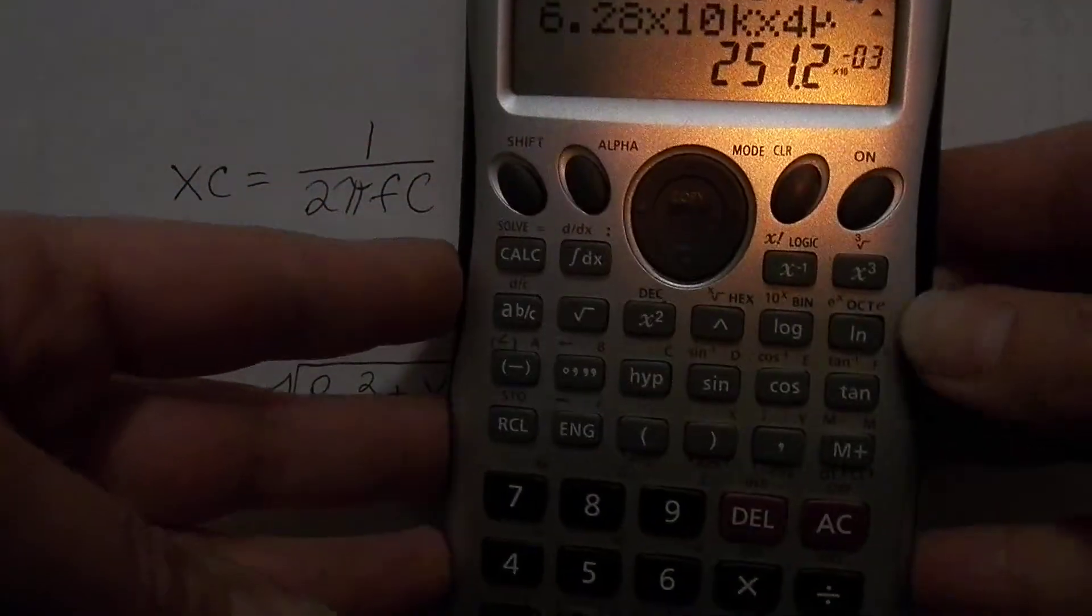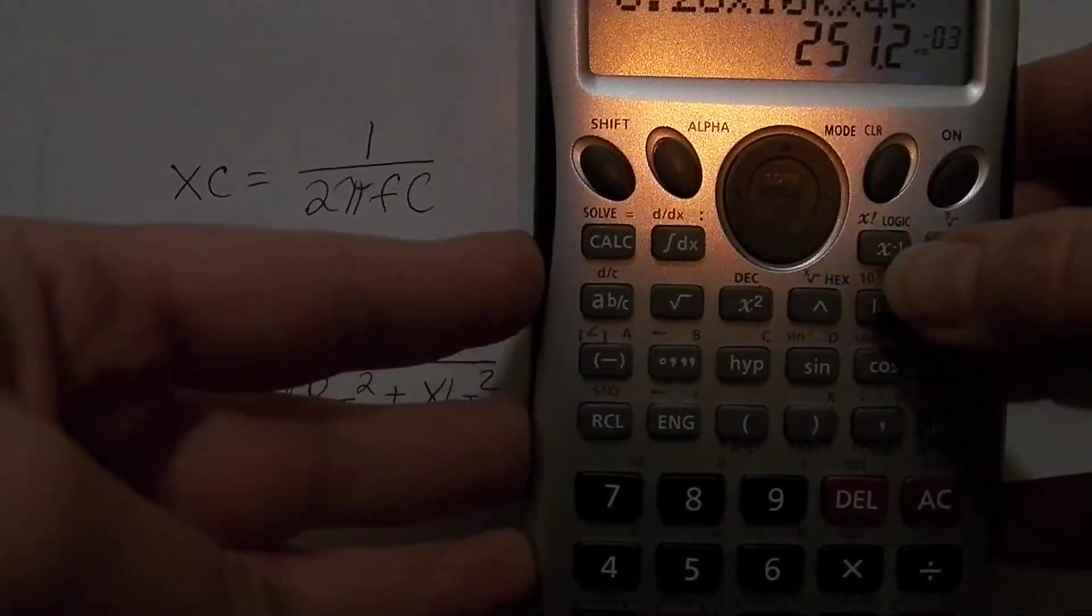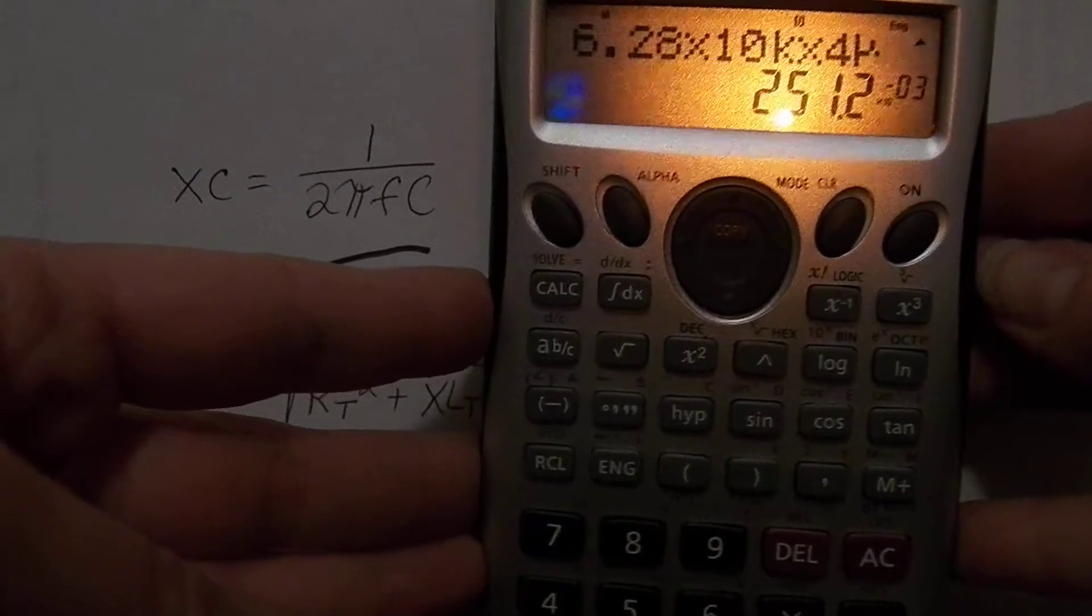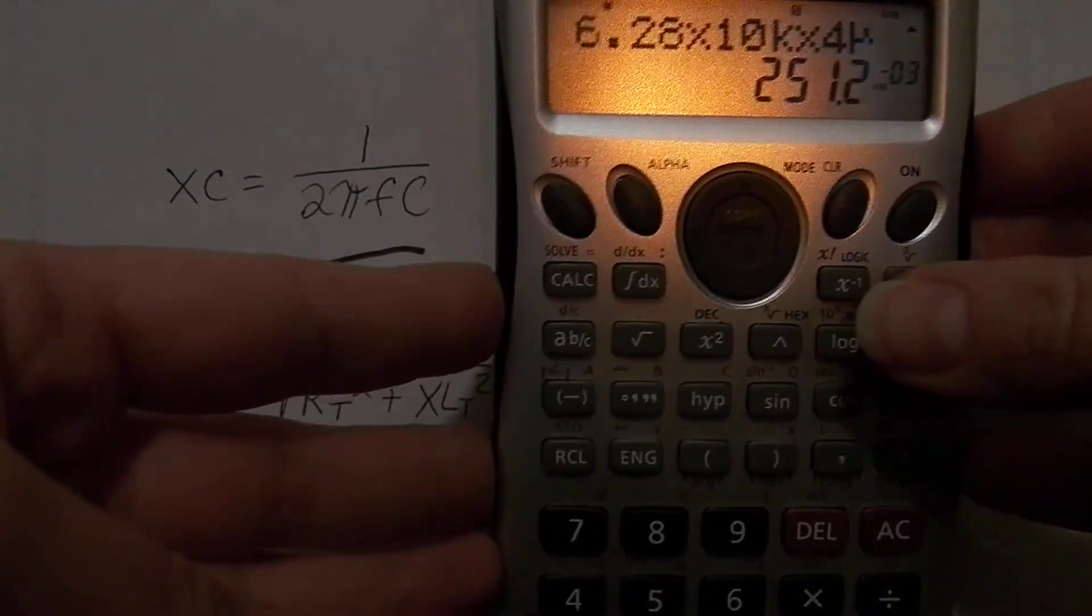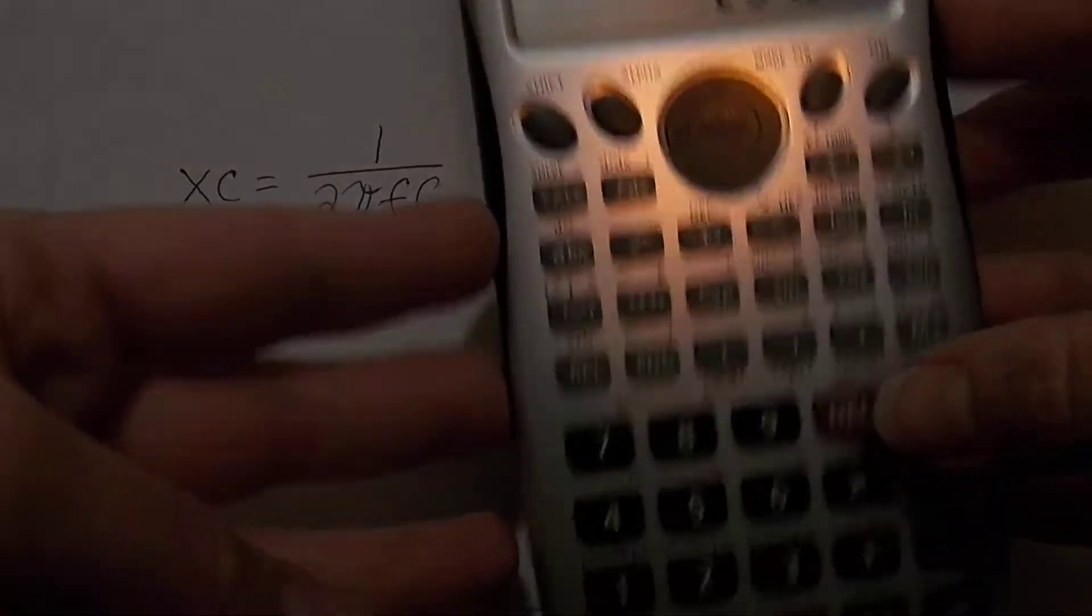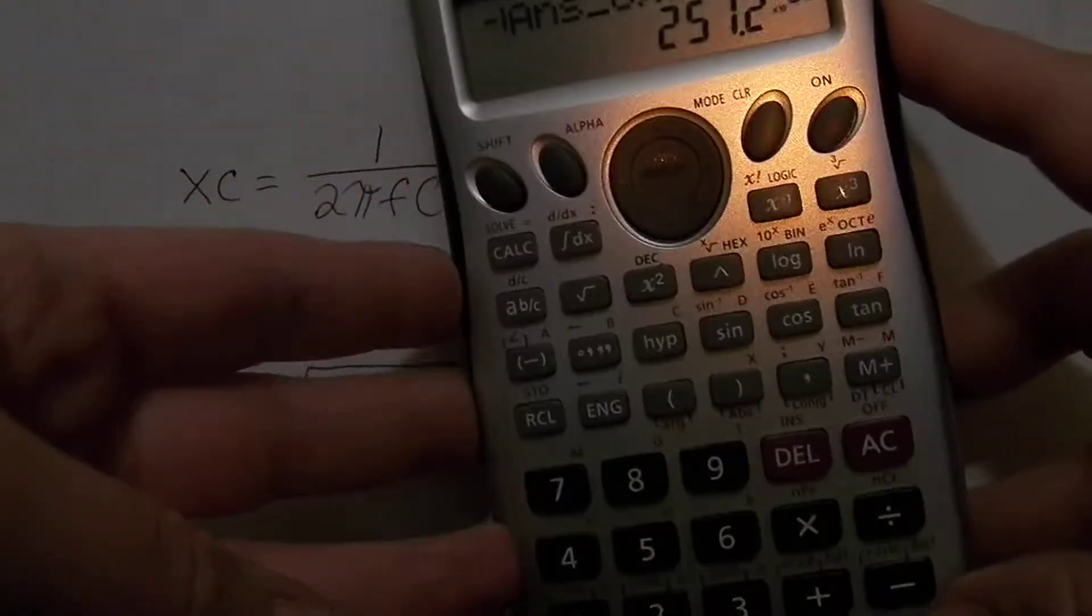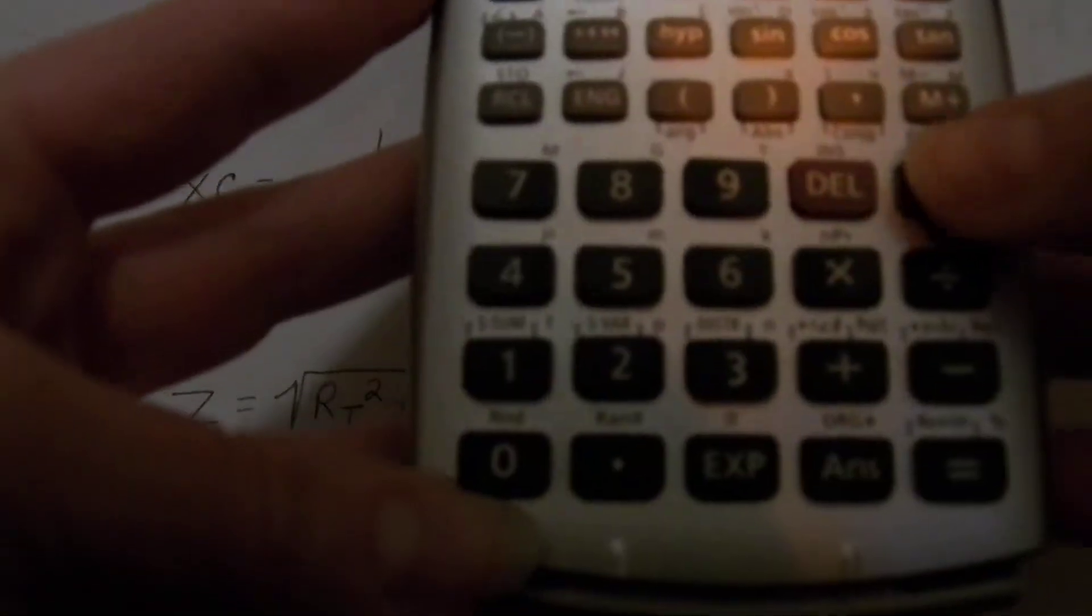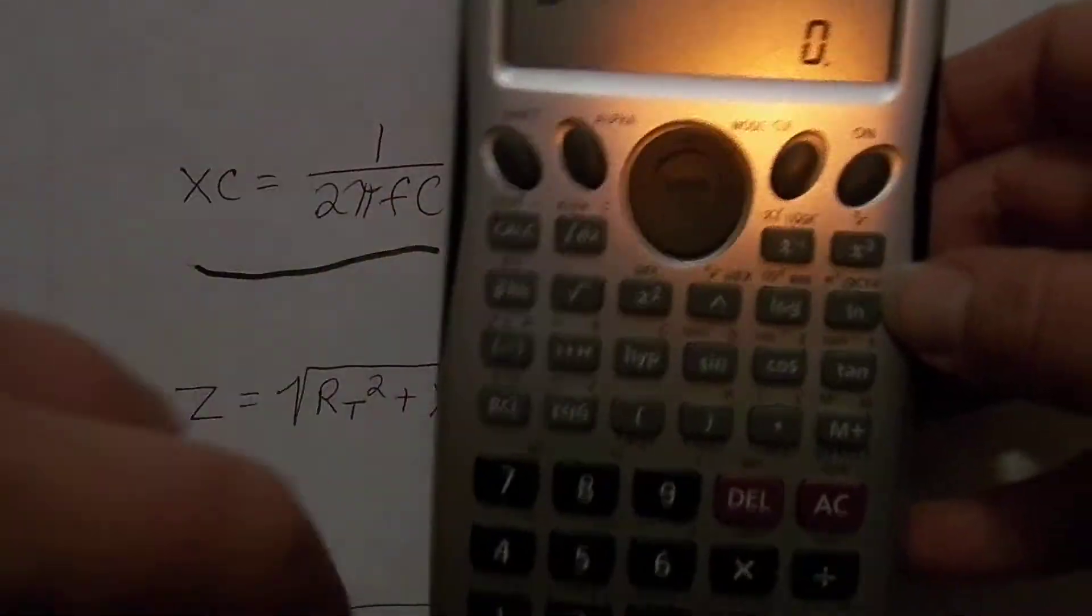So then what we would do next is hit this x^-1 up here, which is essentially the same thing as saying 1 over something. So hit your x^-1, answer equals—oops. And you get a syntax error because we put the wrong thing in. Alright, let's do this again.